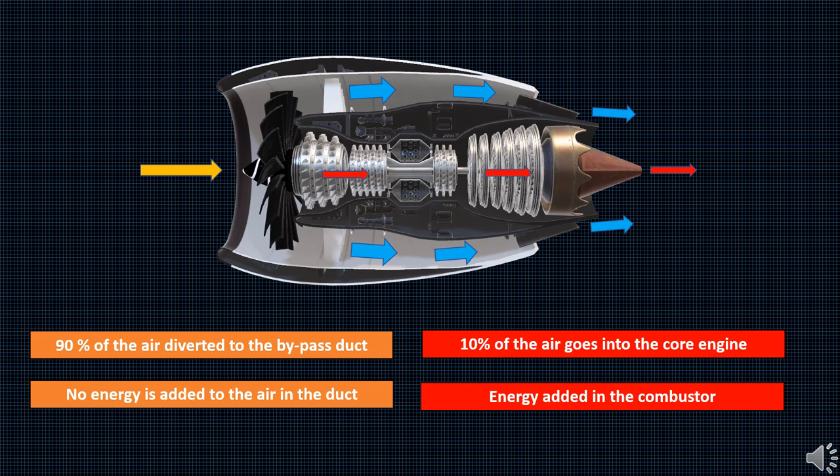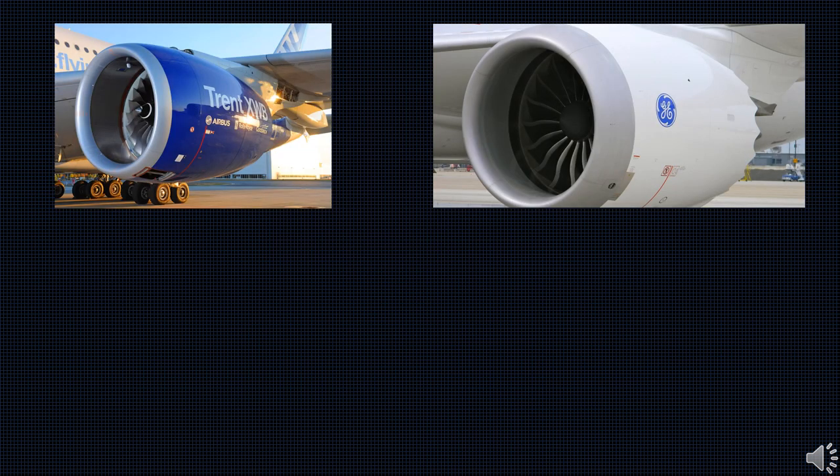It simply passes through the duct and exits through the nozzle at the end of the duct, attaining the same momentum increase just because of the huge mass flow of air.